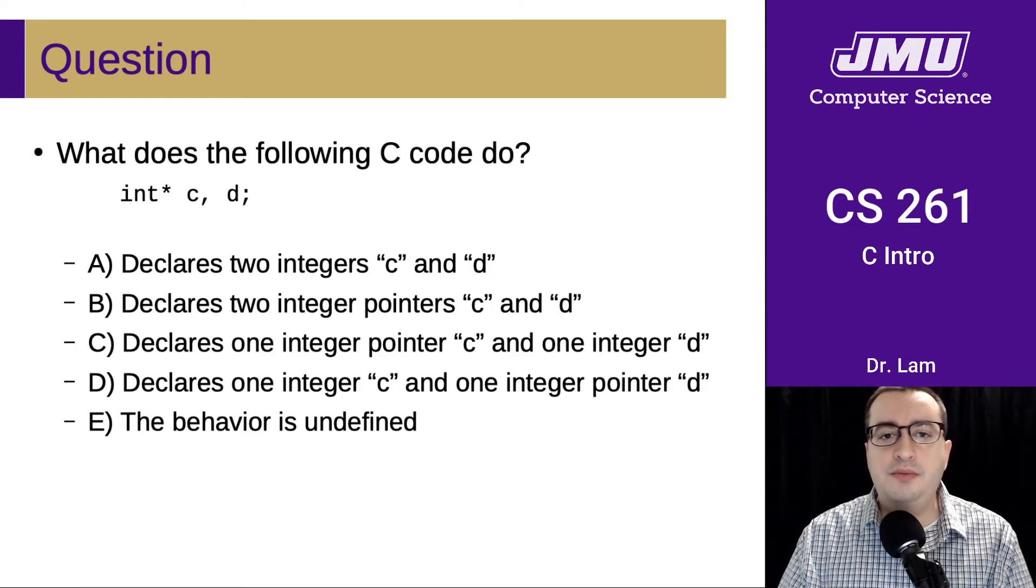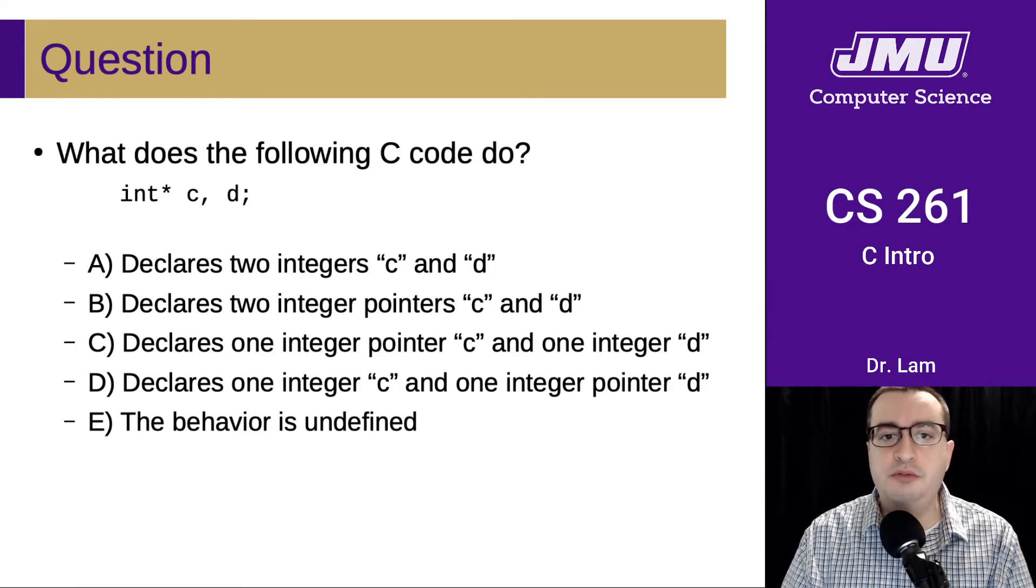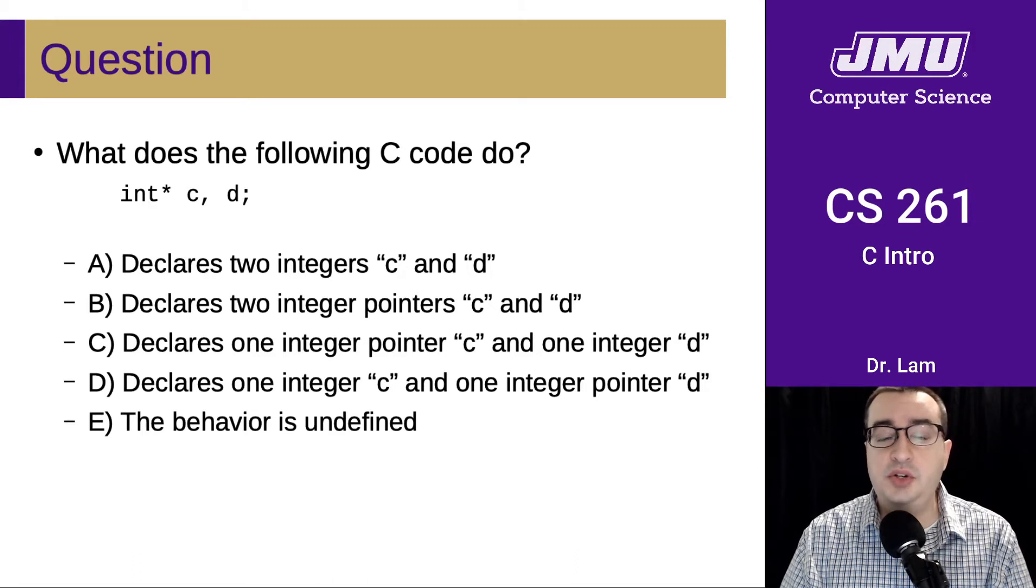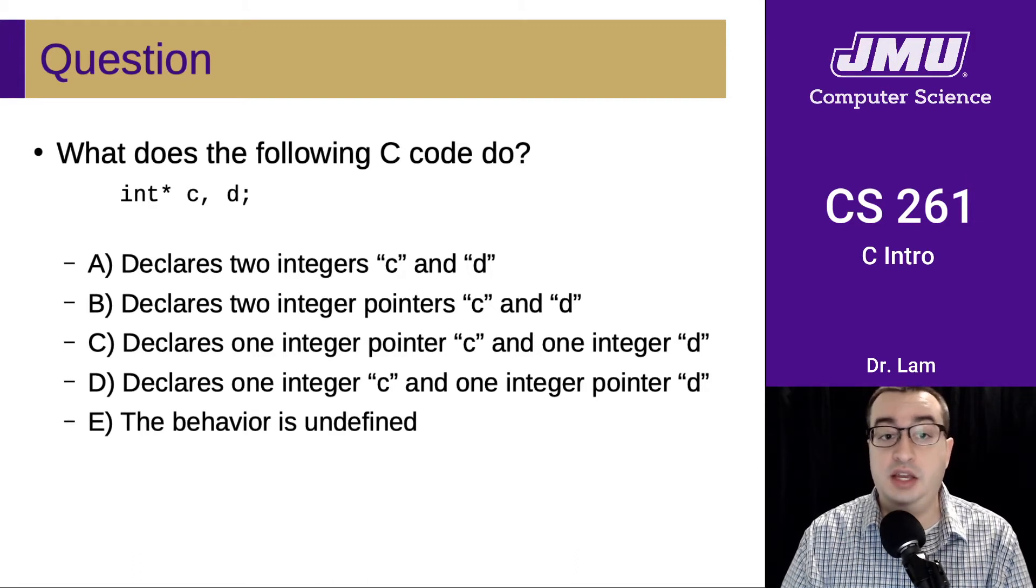So the somewhat counterintuitive result here is that this is actually going to do answer C. It's going to declare C to be an integer pointer and it's going to declare D to be an actual integer.